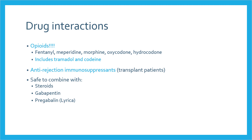LDN can be taken with other medications or supplements as long as they are not opioids. Examples of opioids include fentanyl, meperidine, morphine, oxycodone, and hydrocodone. It's also important not to forget about tramadol and codeine, which are milder but still opioids. LDN also has drug interactions with anti-rejection immunosuppressants, which are commonly taken by transplant patients. However, LDN is safe to combine with steroids, gabapentin, and pregabalin.